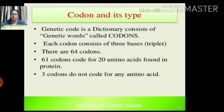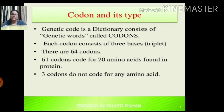What are codons and their types? The genetic code is a dictionary consisting of genetic words called codons. In every codon, there are three bases — it is always in triplet form. There are 64 codons in total, of which 61 codons code for the 20 amino acids found in proteins. The remaining three codons do not code for any amino acid.